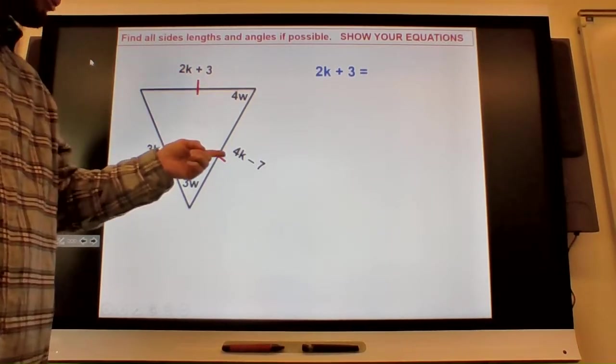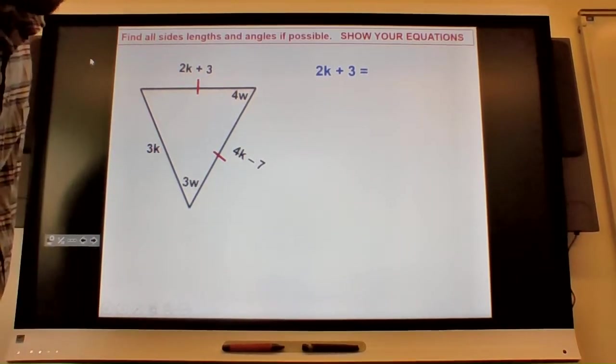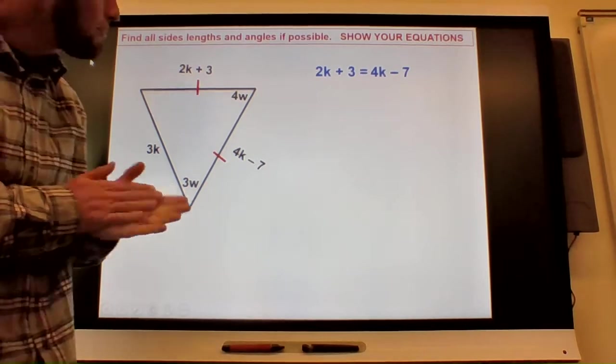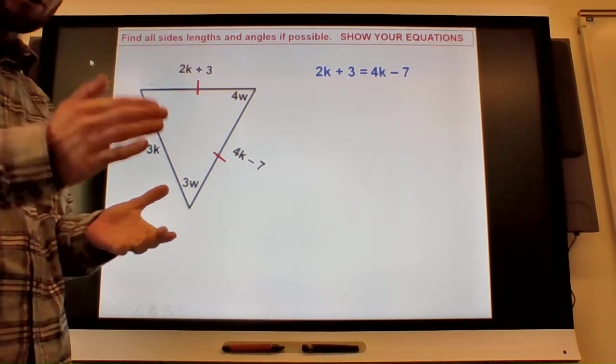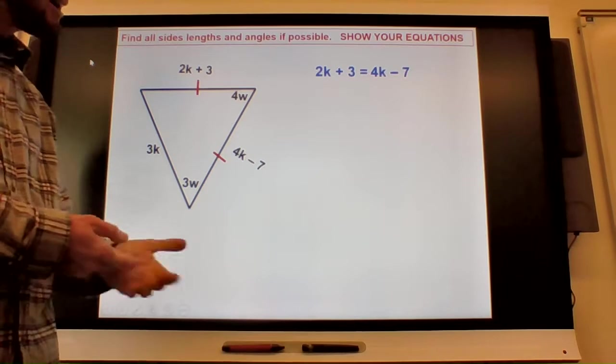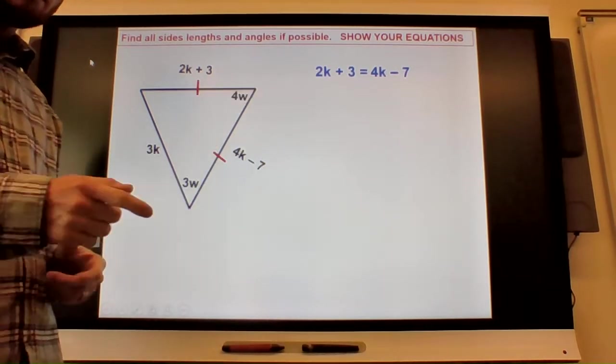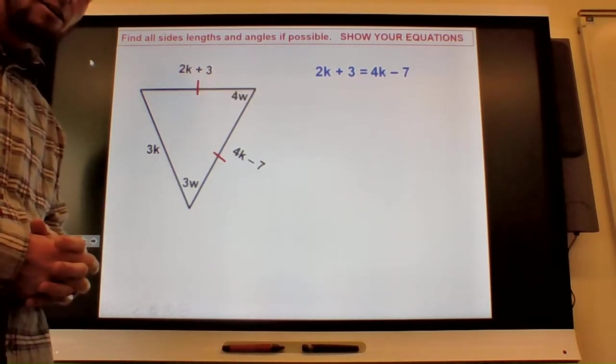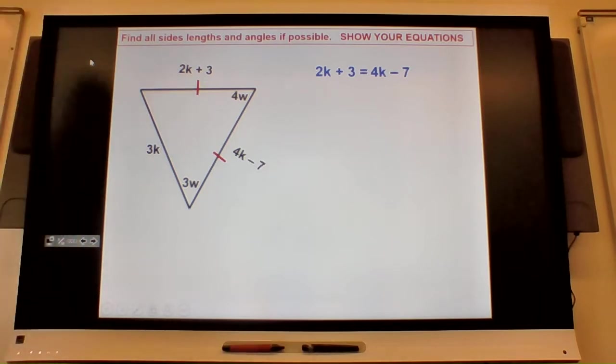All right, so 2k plus 3 is equal to 4k minus 7. Aria, how would you solve that problem? What would you do next to solve that? You're supposed to know what that means. You're honors math one. Come on now. You probably add 7 to both sides, right? 3 plus 7... 10. Good, you got it right. Well done.